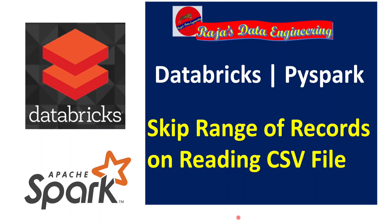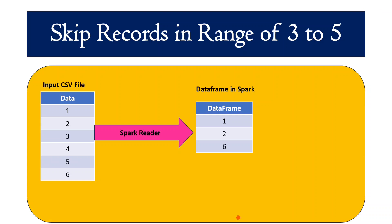In this video, I am going to explain the steps needed to skip certain records in the middle, and finally I will create a user-defined function that can be treated as a utility function and reused in your project. Let's understand the requirement first. Say I have a CSV file with one field, ID, having six records with values one to six. My requirement is to skip records three to five. As a result, I will get only records one, two, and six in the output data frame.